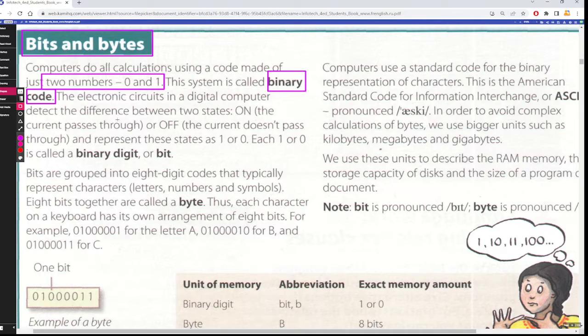The electronic circuits in a digital computer detect the difference between two states. On, the current passes through, or off, the current doesn't pass through. And represent these states as one or zero. Each one or zero is called a binary digit, or bit.